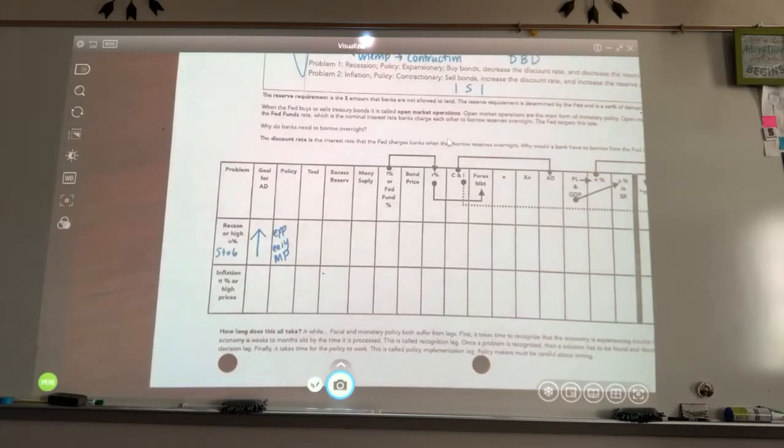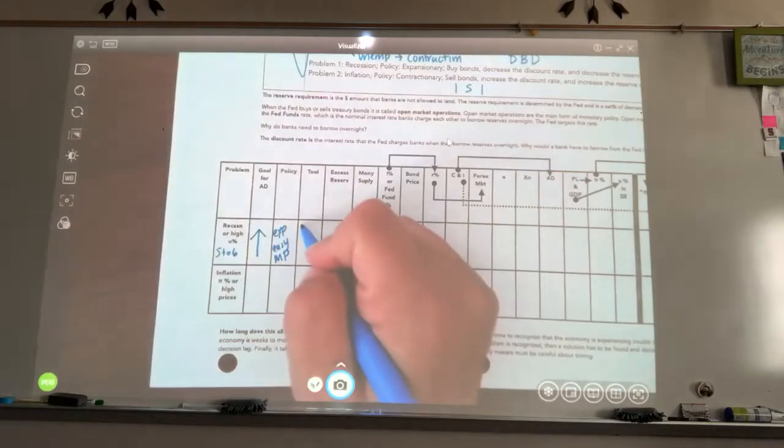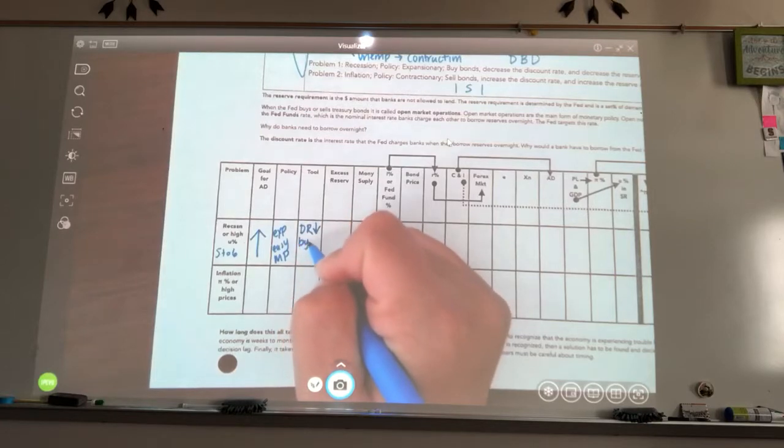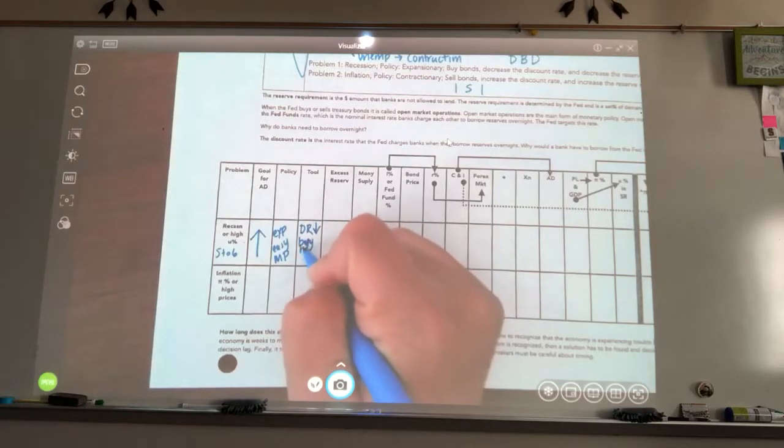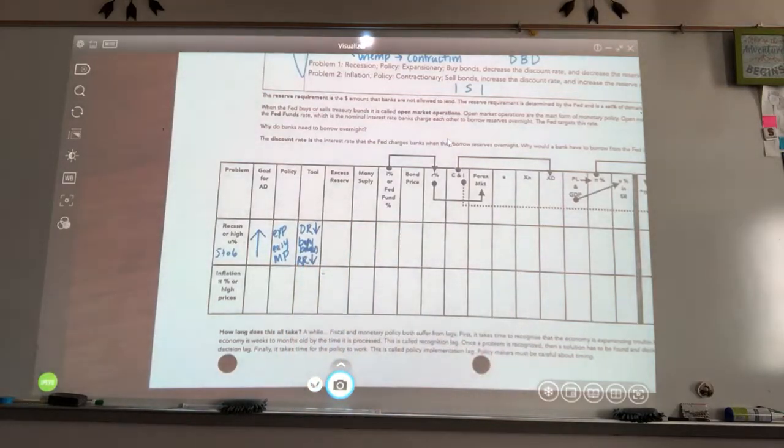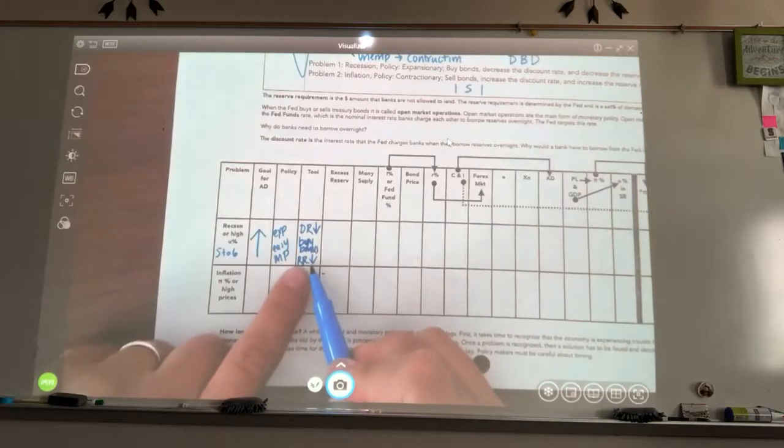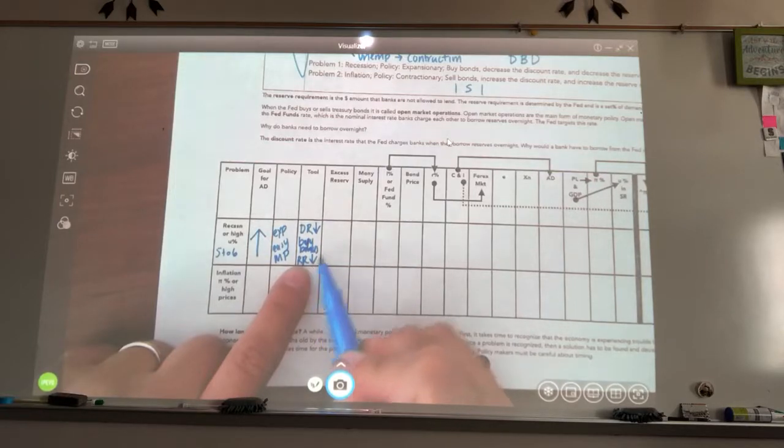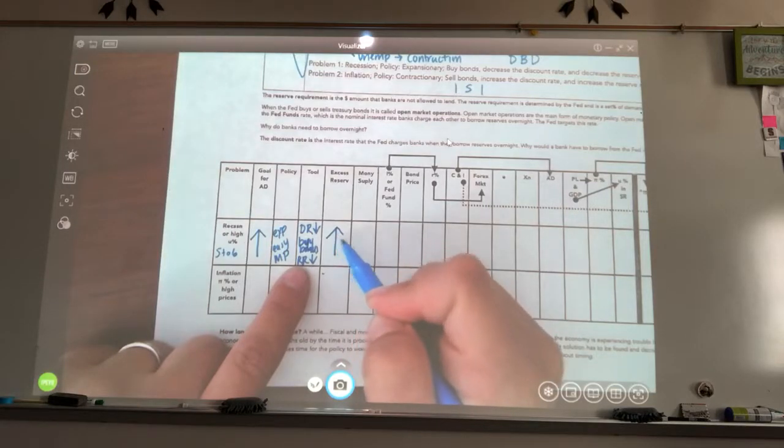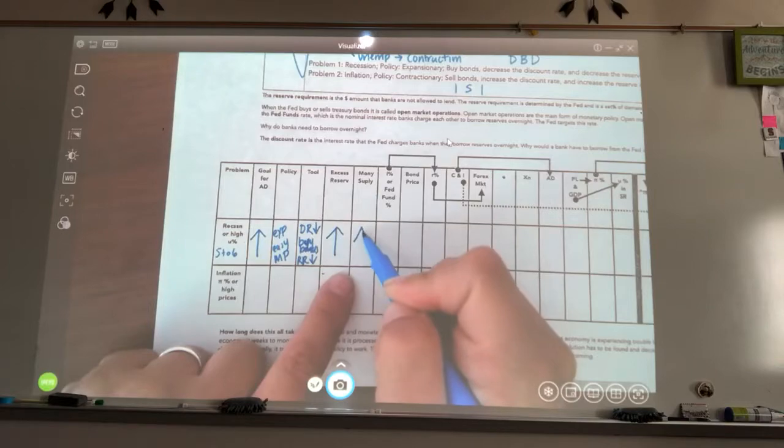So our tools - remember I said in a recession, down, boy, down. So that discount rate is going to go which way? Down. We're going to buy bonds. And we're going to reduce the reserve requirement. So now, if the reserve requirement is lowered, that means they have to hold less in reserve. So what happens to excess reserves? It goes up. So if excess reserve goes up, what happens to my money supply? It goes up.